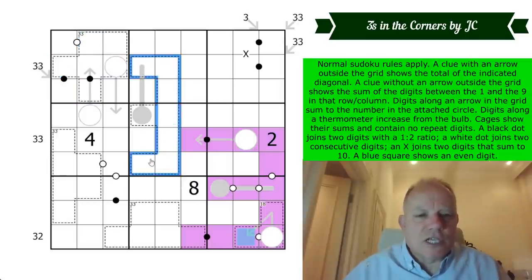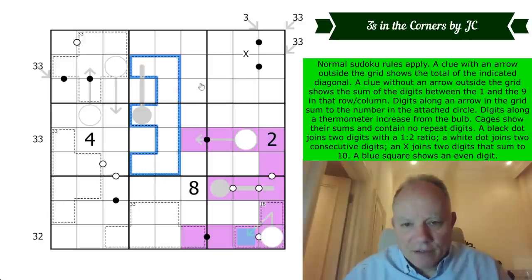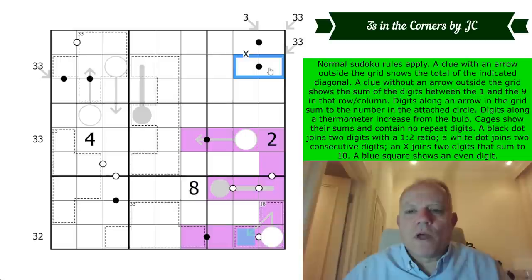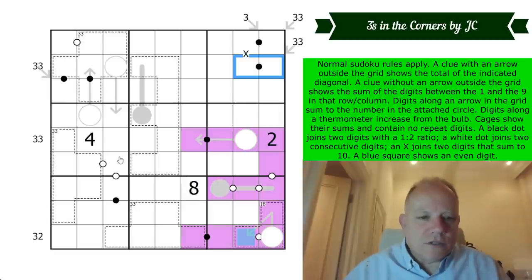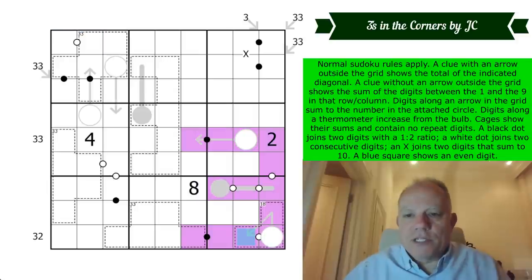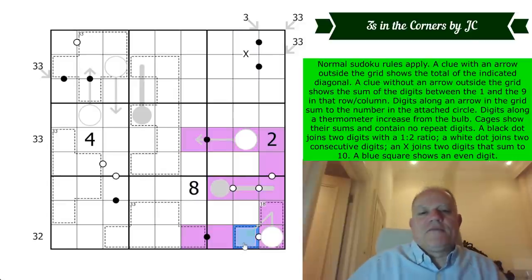So that has to be lower than that, has to be lower than that. Cages show their sums and contain no repeat digits. So these six digits add up to 33. Actually, this cage doesn't show its sum, but the fact that it contains no repeat digits is probably important, as is the fact that it looks like a three, I've no doubt. A black dot joins two cells with a one to two ratio. So you could have four and eight in those cells, for instance.